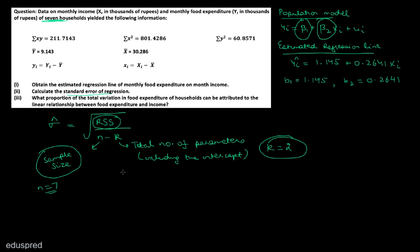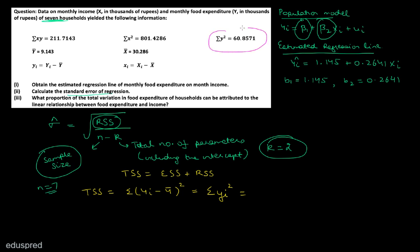To find the residual sum of squares, I am going to use the equation TSS equals ESS plus RSS. TSS is defined as summation of (Yi minus Y bar) whole square, which using our notations can be written as summation of small yi square. We are given the value of summation of small yi square in the question, so TSS equals 60.8571. If we can figure out the value of ESS, then finding the value of RSS will be simple.